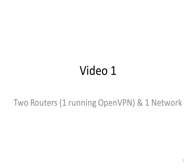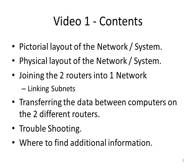This is video one of three. All three videos can be watched independently, but this one is talking about how you connect two routers — one of them running DD-WRT and OpenVPN — and I'm assuming for this tutorial that you have successfully installed DD-WRT and your VPN client is working. The contents of this video cover the setup of the system, how we join the two routers to create one network, how we transfer data between machines, troubleshooting, and where to find additional information.